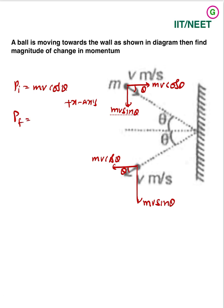So p final minus mv cos theta, that should be minus x-axis direction.